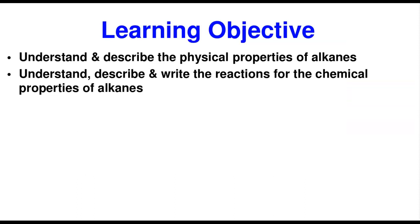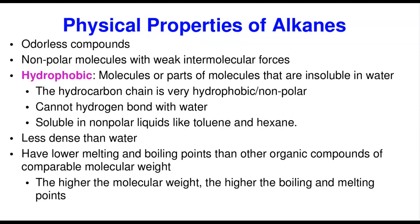The little objectives here — we have two things that we're going to take away from this class. Number one, we're going to understand and describe the physical properties of alkanes. And two, we understand and describe and write the reactions for each chemical property as well. Those are the two things we'll do, just like the title says: the physical and chemical properties of alkanes.